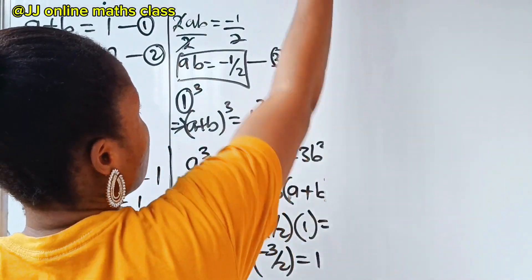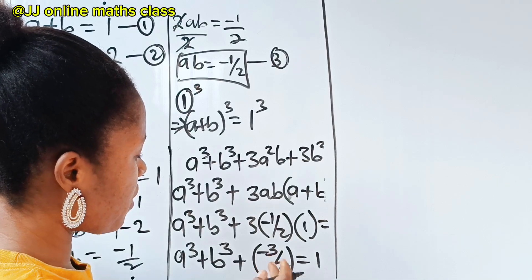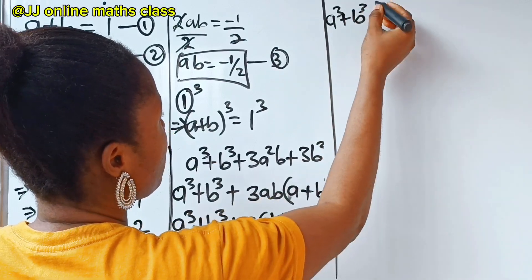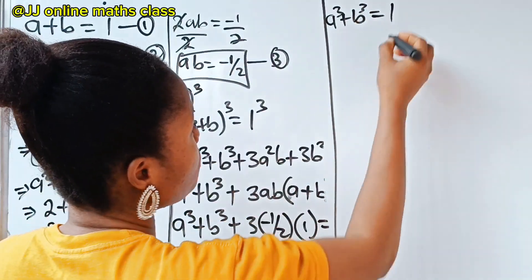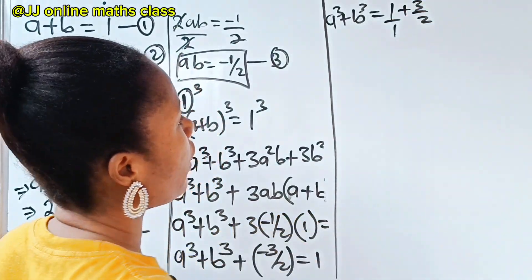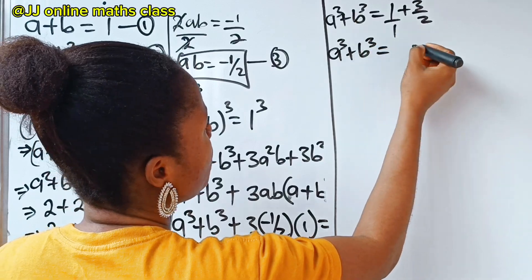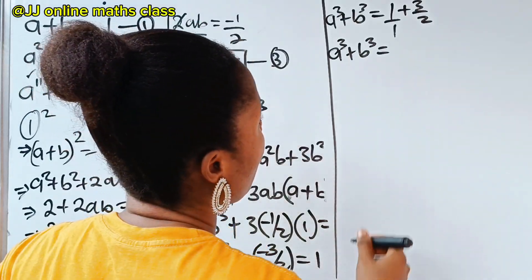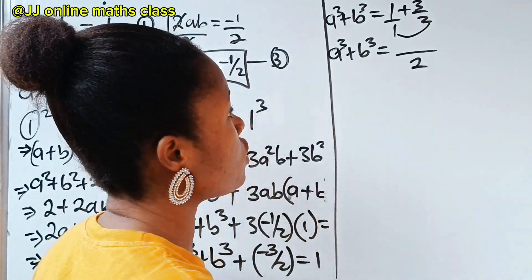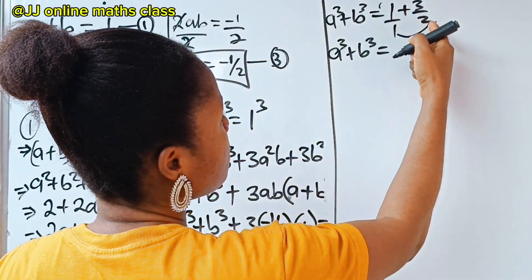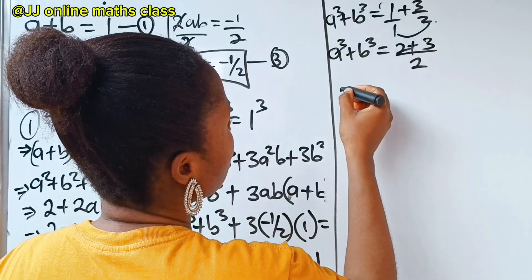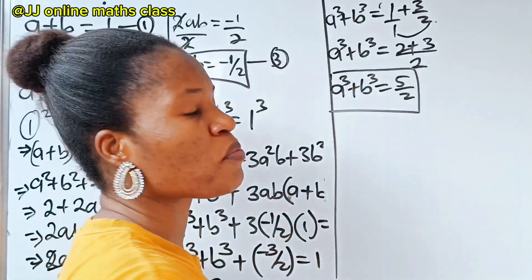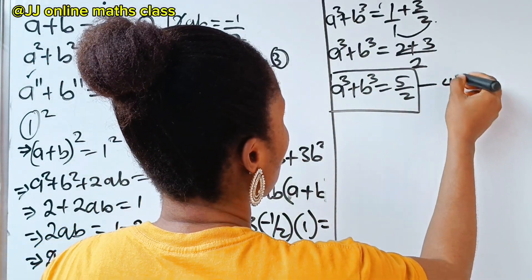Now we can transfer minus 3 over 2 to the other side of the equation. So a to the power of 3 plus b to the power of 3 is equal to 1 plus 3 over 2. Using the butterfly method, the denominator is 2, and cross-multiplying gives us 1 times 2 equals 2, plus 3 times 1 equals 3. So a to the power of 3 plus b to the power of 3 is equal to 5 over 2. Let's call this equation 4.